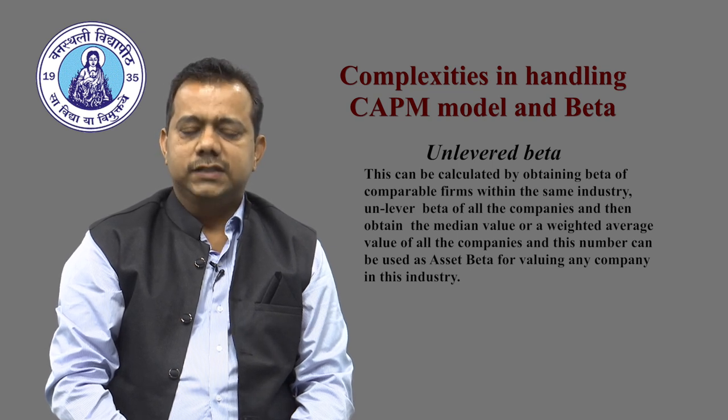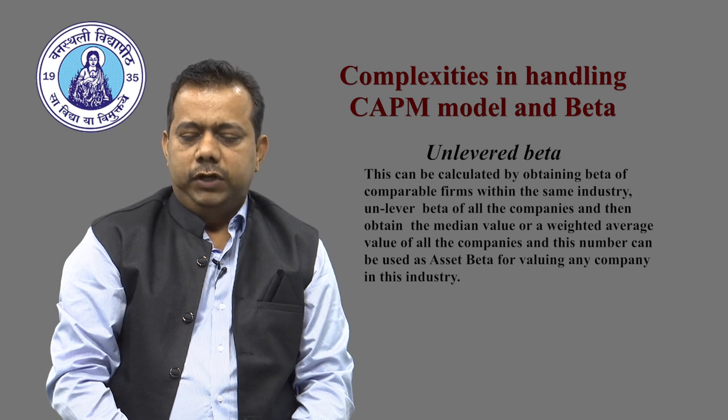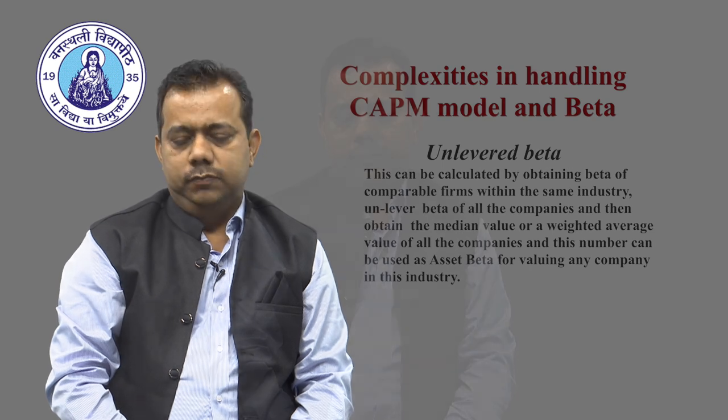To calculate unlevered beta, obtain the beta of comparable firms within the same industry, unlever them using the Hamada equation with their respective debt-equity ratios, and then take the median or weighted average — this is used as the asset beta. For example, to value a startup in auto parts, first determine its industry, find comparable auto parts companies, obtain their betas from market price versus index values, then unlever them to get the asset betas.